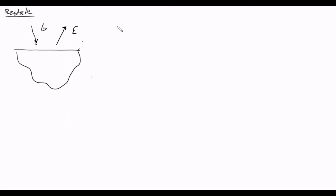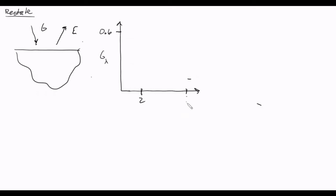Now, we have a specific irradiation profile that's been given to us. This isn't any irradiation — this is spectral irradiation. In other words, it changes with wavelength. We've been given a plot of what that spectral irradiation looks like. Here's the wavelength, and here is the spectral irradiation. We know it's zero from wavelengths of zero to two, and then it jumps up to 0.6, and it's 0.6 after that. That's how the irradiation changes with wavelength.